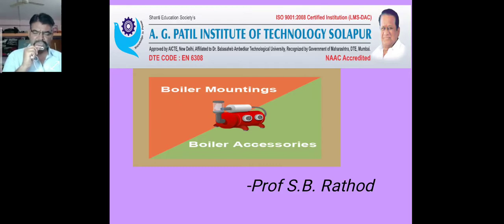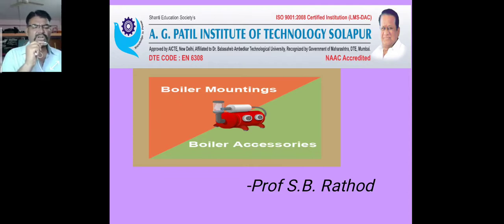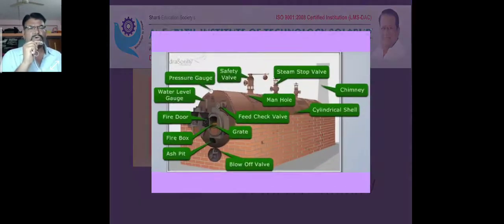There are different parts like combustion chamber, grate, furnace, mountings, and accessories. Boiler mountings are fittings mounted on the boiler to govern its proper functioning — examples include water level indicator, pressure gauge, and safety valve. Boiler accessories are devices which form an integral part of the boiler, such as superheater, economizer, and feed pump, and they are used to increase the efficiency of the boiler.